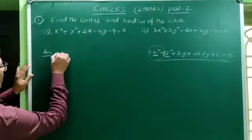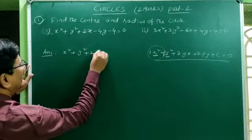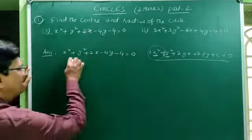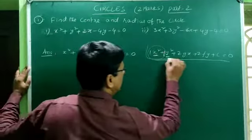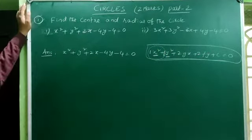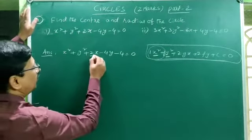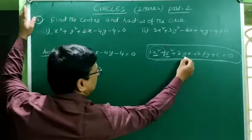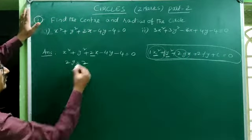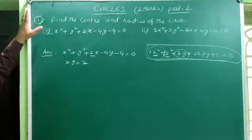The given equation is x² + y² + 2x − 4y − 4 = 0. Compare this with the general form x² + y² + 2gx + 2fy + c = 0. Here the x coefficient is 2, and in general form it is 2g, so 2g = 2.